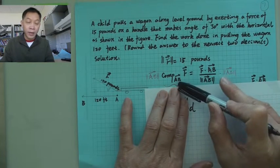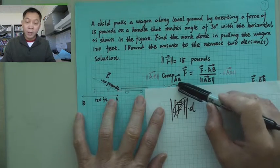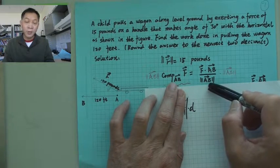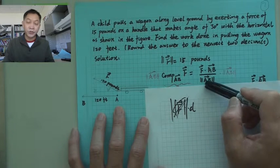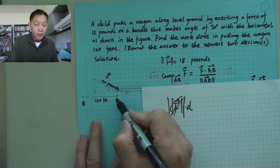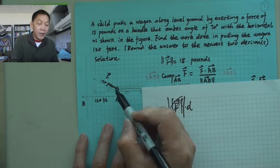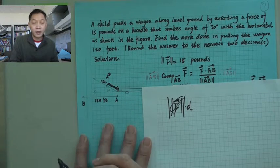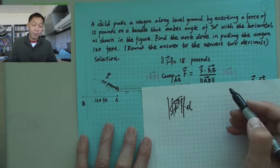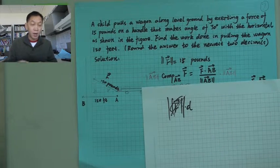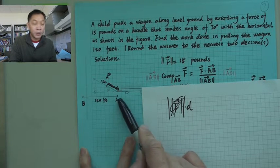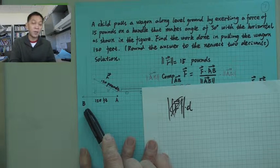The projection of F on AB — where AB is the displacement vector from the starting position to 120 feet away — gives the work formula. In physics, the distance 120 is not just a number but a vector with direction and magnitude, representing the object moving from point A to point B horizontally.